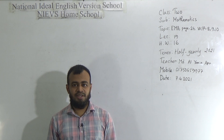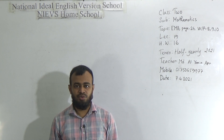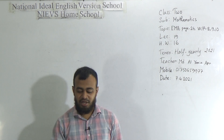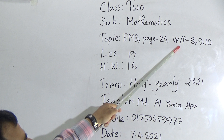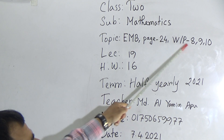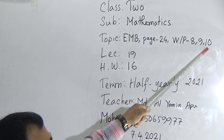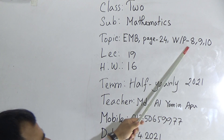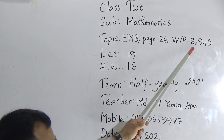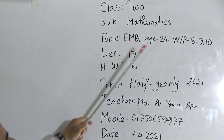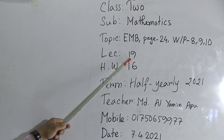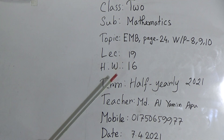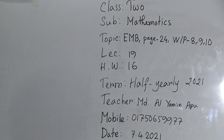Today I am going to take a Mathematics class for the students of class 2. Our today's topic is EMB, page number 24, Word Problem. WP means Word Problem, number 8, 9 and 10. That means we will solve today 3 word problems — 8, 9 and 10 — from your book page number 24. Your lecture number is 19 and today you have homework number 16.